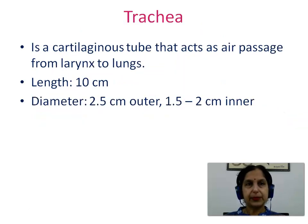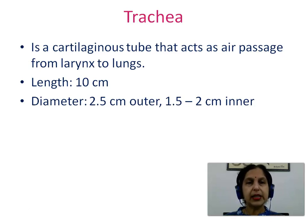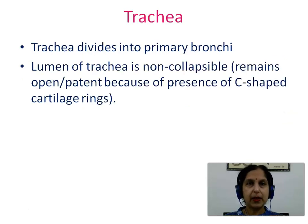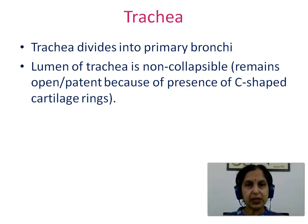Trachea: this is a cartilaginous tube that acts as an air passage from larynx to lungs. The length is 10 cm, outer diameter of 2.5 cm, and inner diameter between 1.5 to 2 cm. The trachea divides into primary bronchi, right and left. The lumen of the trachea is non-collapsible; it remains open or patent because of the presence of C-shaped cartilage rings.